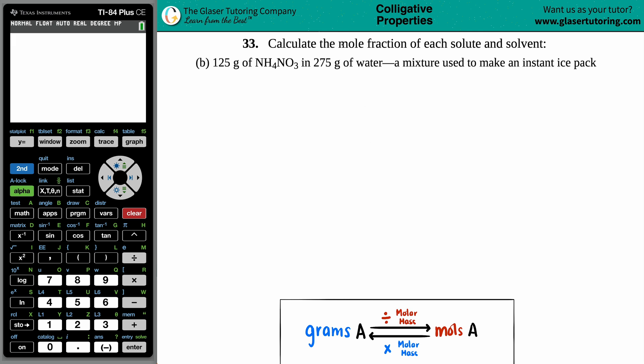Number 33. Calculate the mole fraction of each solute and solvent. And then we have letter B. So in this case, we have 125 grams of NH4NO3 in 275 grams of water, a mixture used to make an instant ice pack.